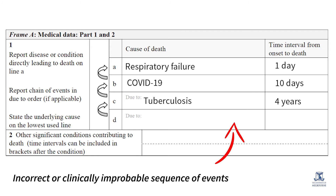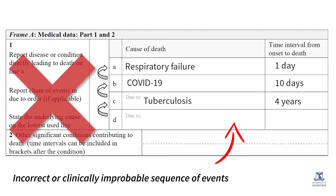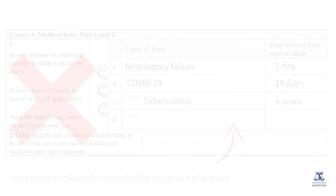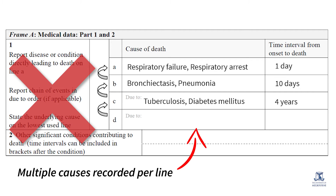Recording an incorrect or clinically improbable sequence of events leading to death is another error frequently made by certifiers. As mortality statistics are based on the underlying cause of death — the condition or injury that initiated the sequence of events — Line 1A must always contain the immediate or direct cause of death and must never be left blank. Where there are two or more conditions forming part of the sequence of events leading directly to death, each event should be recorded on a separate line. The WHO ICD guidelines state that only one cause should be recorded per line. When more than one cause is reported on a single line, it makes it difficult for coders to establish the sequence and select the correct underlying cause of death.